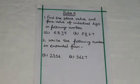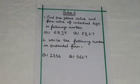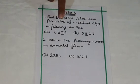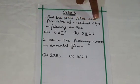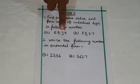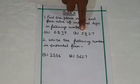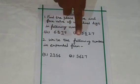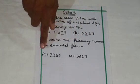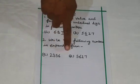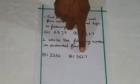Friends, at home you can prepare number cards with the help of papers and solve. First sum: find the place value and face value of the underlined digits in the following numbers — first number 6,879 and second number 5,627. Second sum: write the following numbers in expanded form — first number 2,356 and second number 5,627.